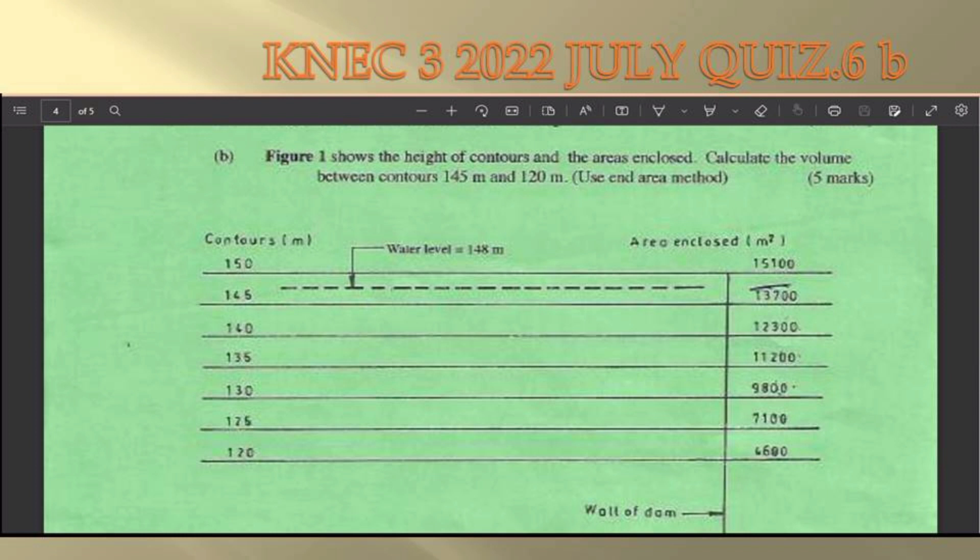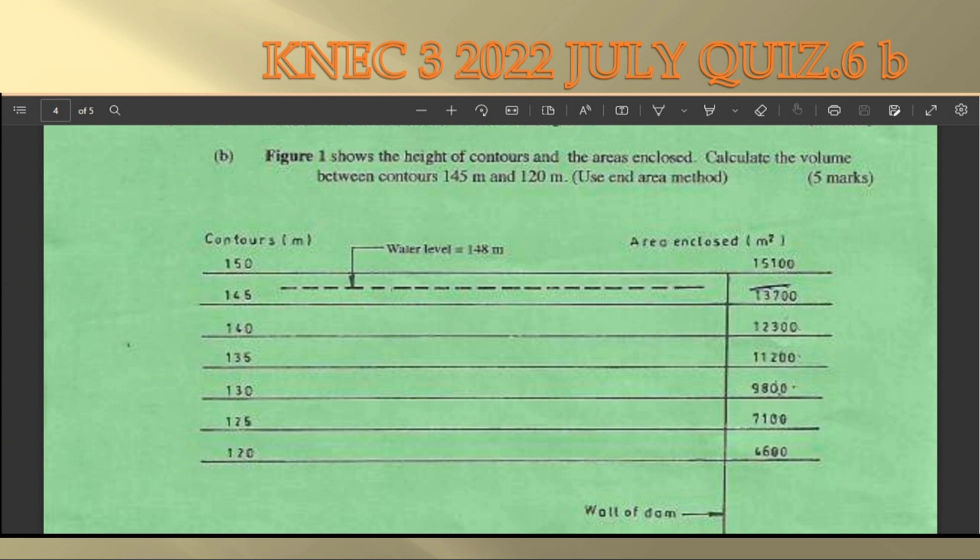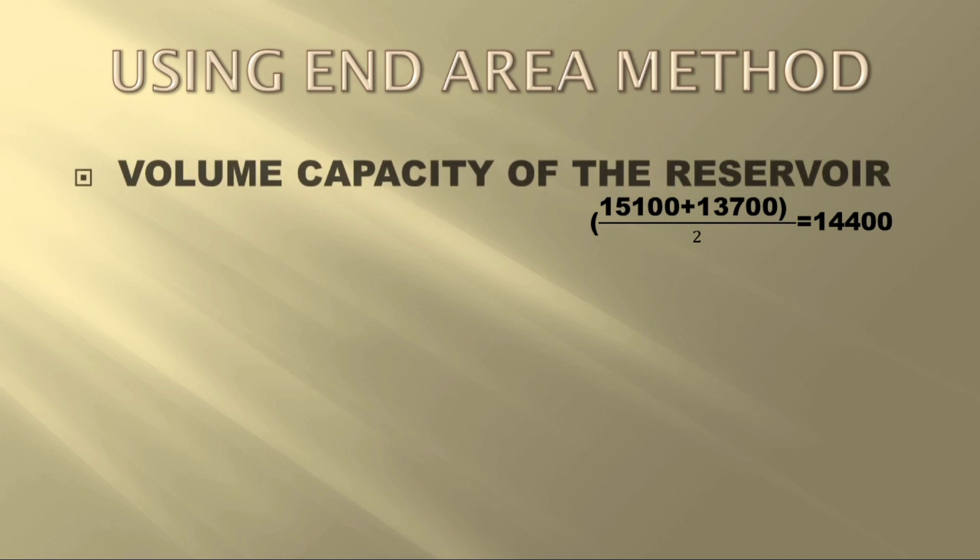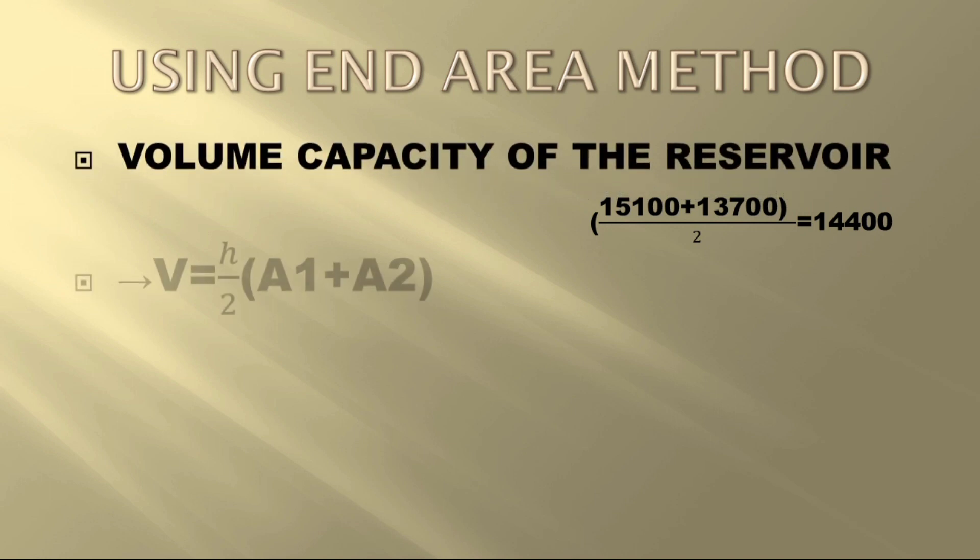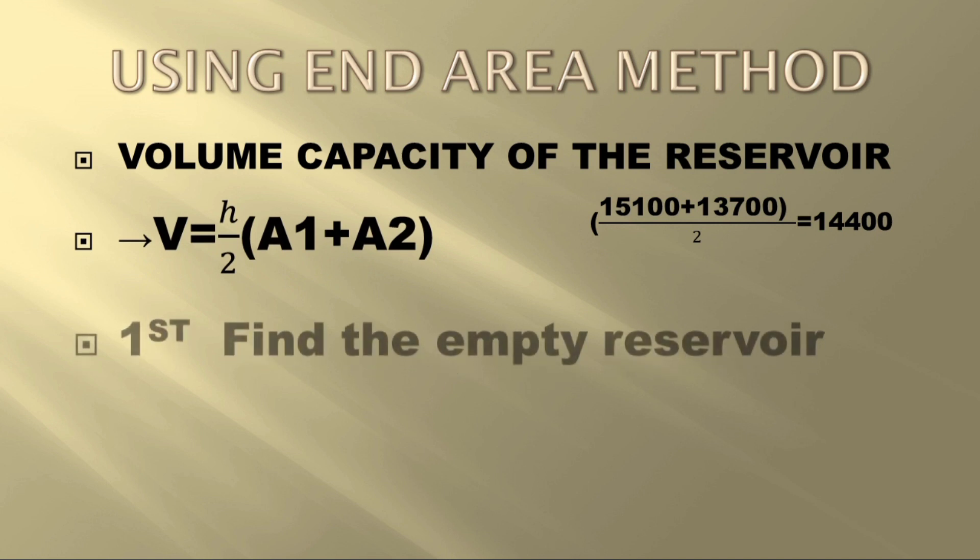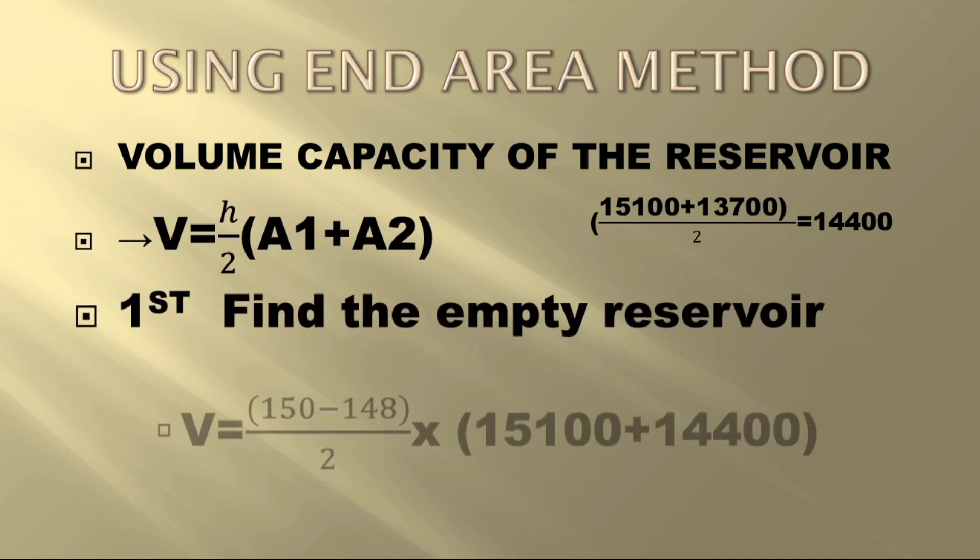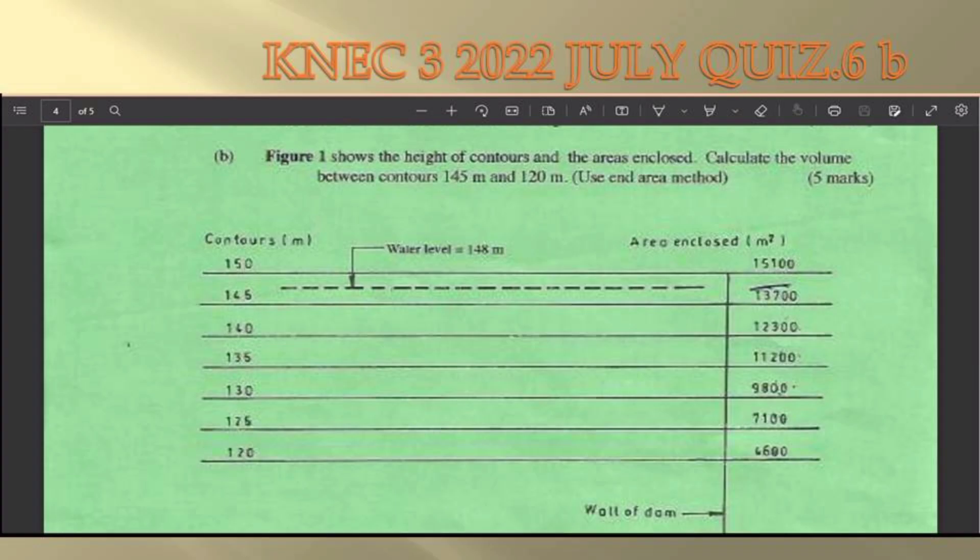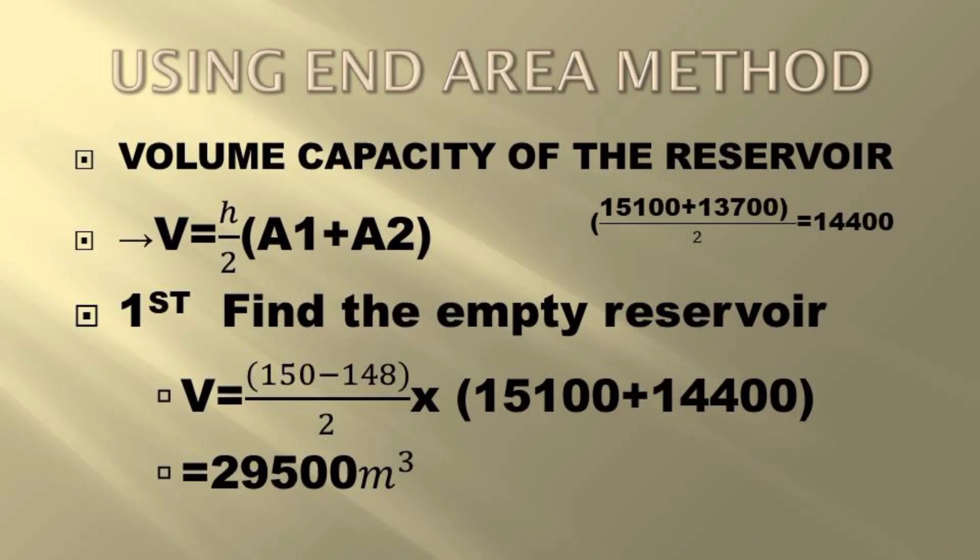Let's start with understanding the formula to apply. By the looks of the question, we are to use the end area method. The volume can be calculated by this formula: V equals h over 2 into brackets area 1 plus area 2, where A is the area of the successive contours.